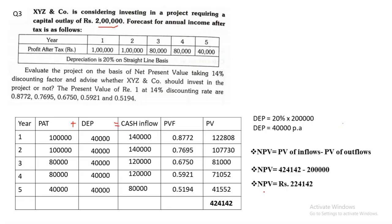We can give a final conclusion that XYZ Company should invest in this project as the NPV is positive and it is a large positive amount. These were three types of sums based on NPV under the chapter Investment Appraisal. The method is simple: multiply cash inflow by PV factor to get the present value, then find the NPV. I hope everyone has understood this topic. Thank you.